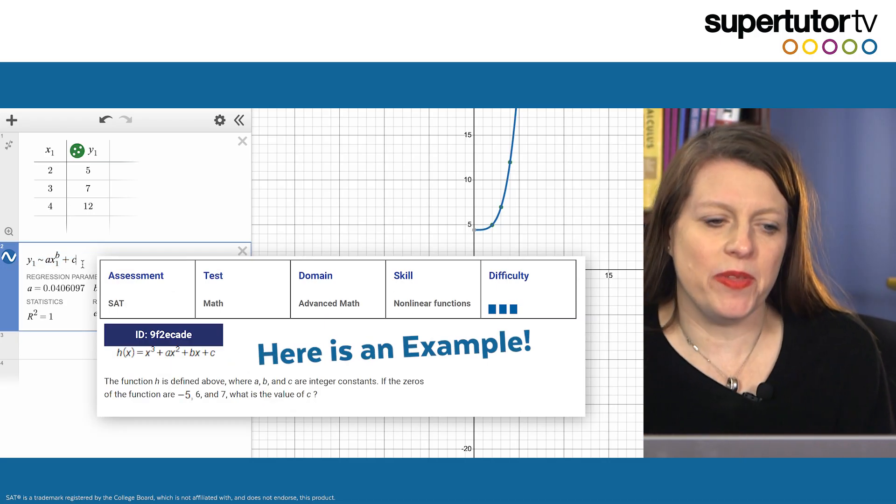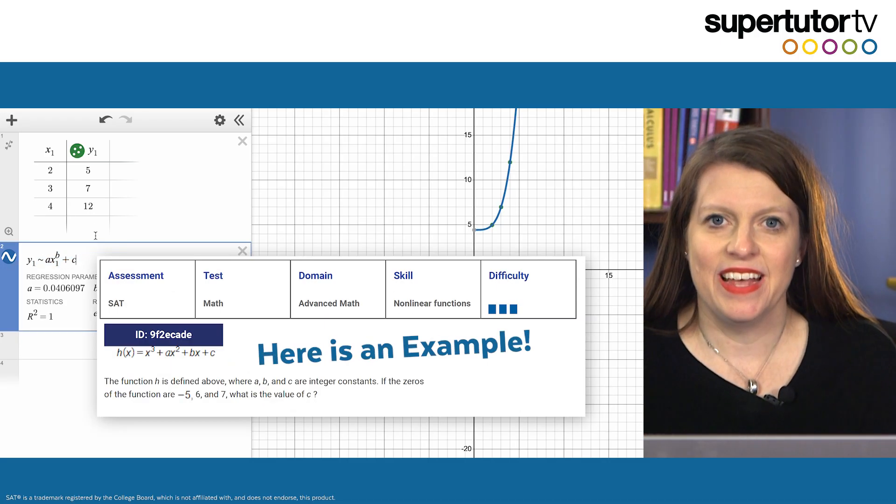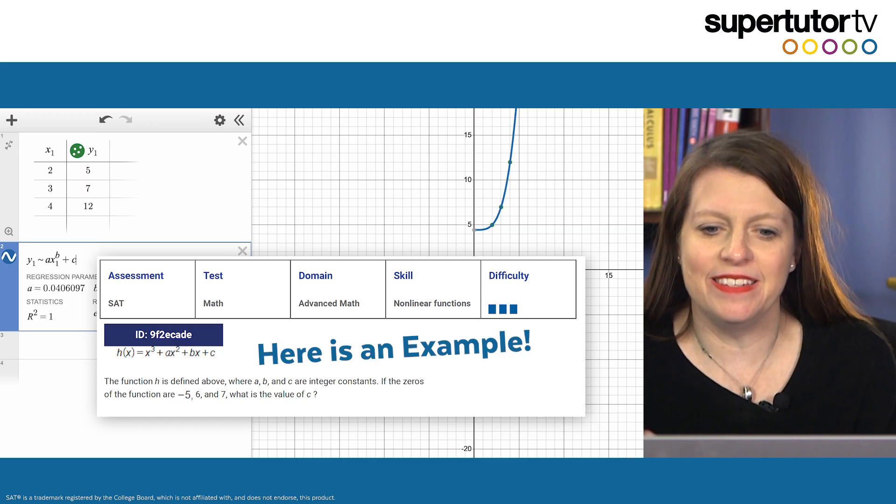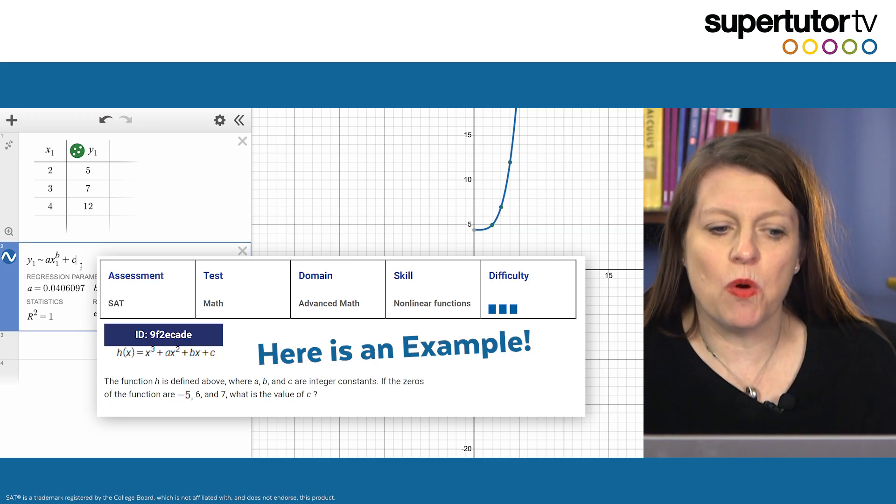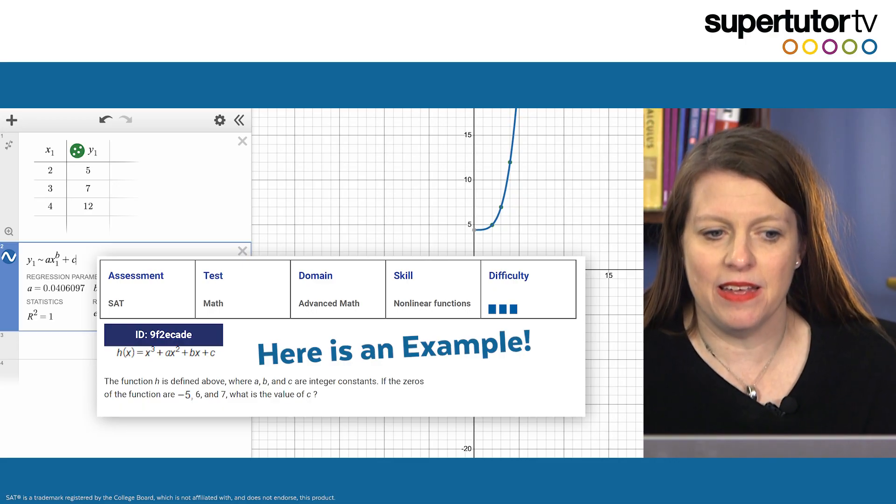So if the college board gives you a formula in the problem, they give you a few points and they ask you which of the following is if x equals this, what would y equal? You can find the equation of the graph and then plug it back in.